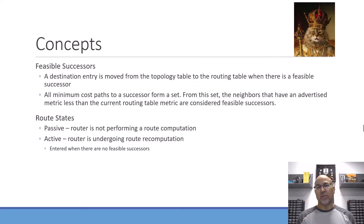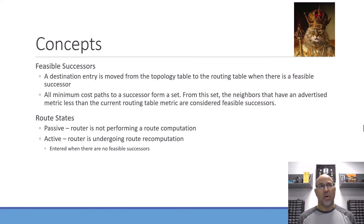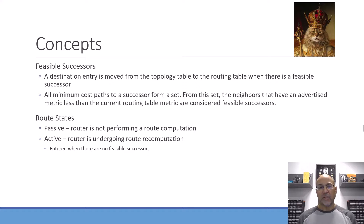In EIGRP there's the concept of route states: either passive or active. If you're in steady state with nothing happening, that is a passive route. If there's a calculation going on — a recomputation of routes, or something changing with that route such as a loss, gain, or addition — then that route becomes active as part of a route recomputation.